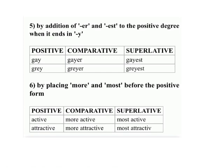Rule 6: By placing 'more' and 'most' before the positive form. Positive, comparative, superlative: active, more active, most active; attractive, more attractive, most attractive.